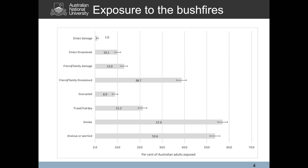What was different about this summer is that large amounts of smoke affected all of Australia's large east coast capital cities — Brisbane earlier in the season, Sydney and Melbourne, Australia's three largest cities, as well as Canberra, Adelaide in the south — were all exposed to a certain degree to smoke, and that's borne out in our data. Over half of the population reported some form of anxiety or worry due to the fires.